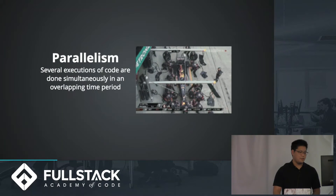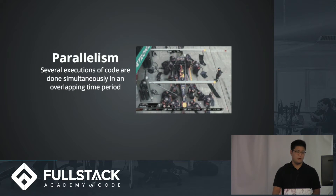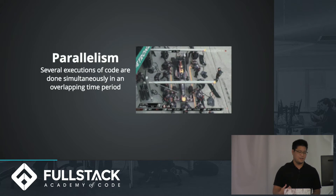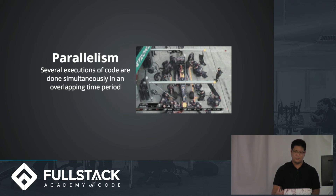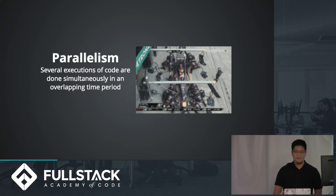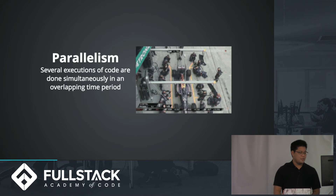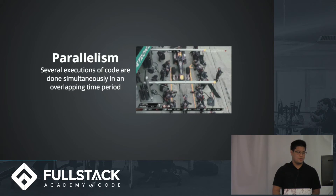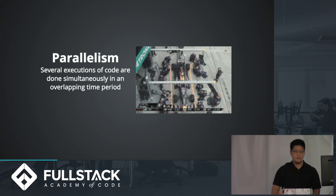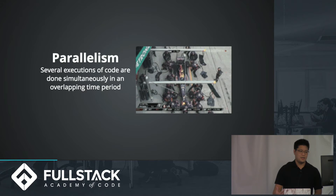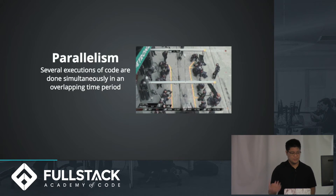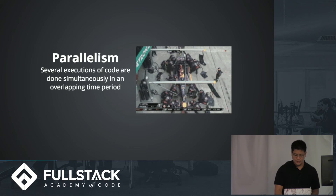But with parallelism, which is what multi-threading really is, you get something like this where let's say all those workers are CPU cores. They're all executing at the same time. So several executions of code are done simultaneously in an overlapping time period, which you can really see here — there's a ton of people working on it at the same time, so substitute that with cores and we get multi-threading.